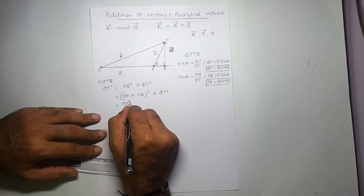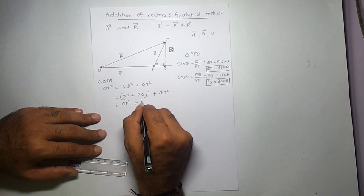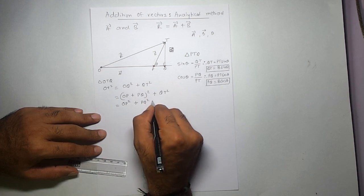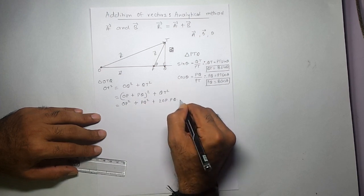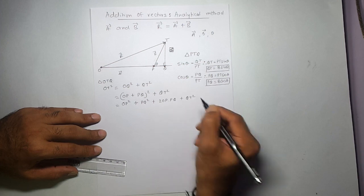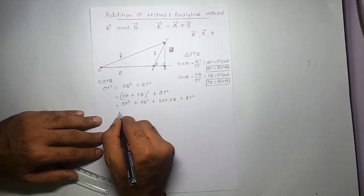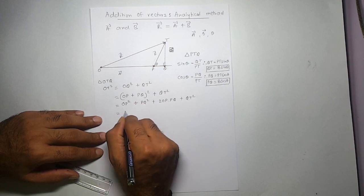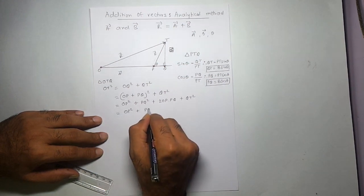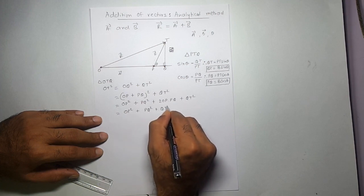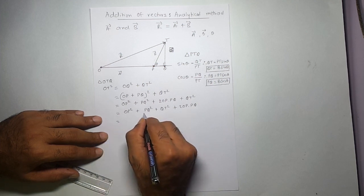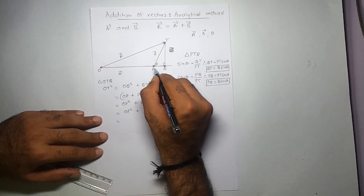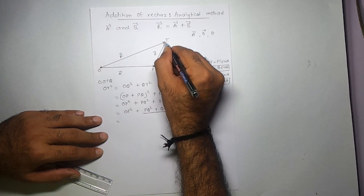Expanding the equation, I get OP² plus PQ² plus 2·OP·PQ plus QT². I can rewrite this as OP² plus (PQ² + QT²) plus 2·OP·PQ.